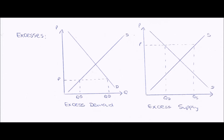However, if our price is not set at the equilibrium, we get excesses of either demand or supply. The graph on the left shows excess demand: at this low price, drawing across to the supply curve gives QS, but drawing further to the demand curve gives QD, which is further along the axis — so demand is greater than supply. The diagram on the right shows excess supply: at this high price, QD is closer along the axis than QS, so supply is greater than demand and there is excess supply.